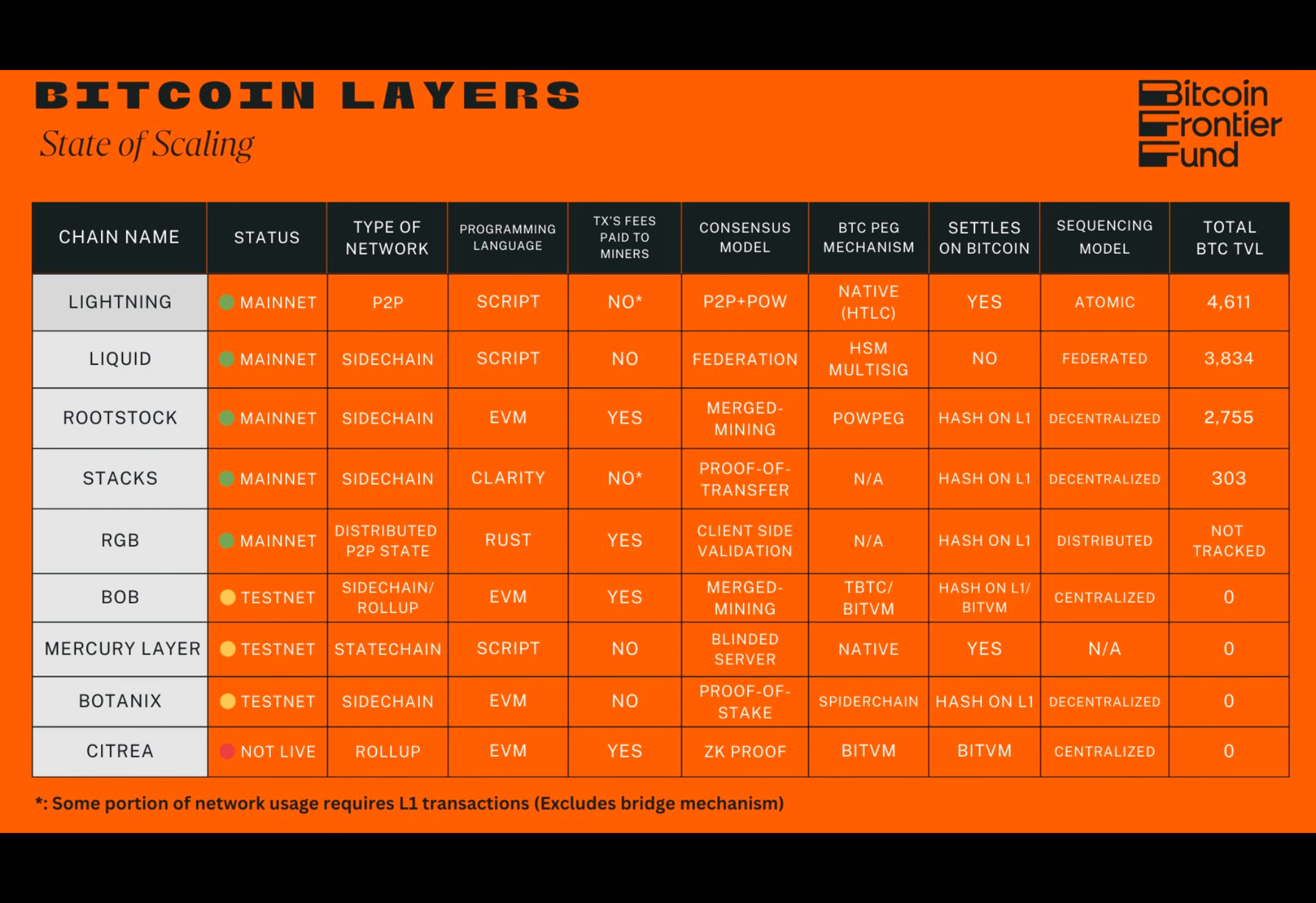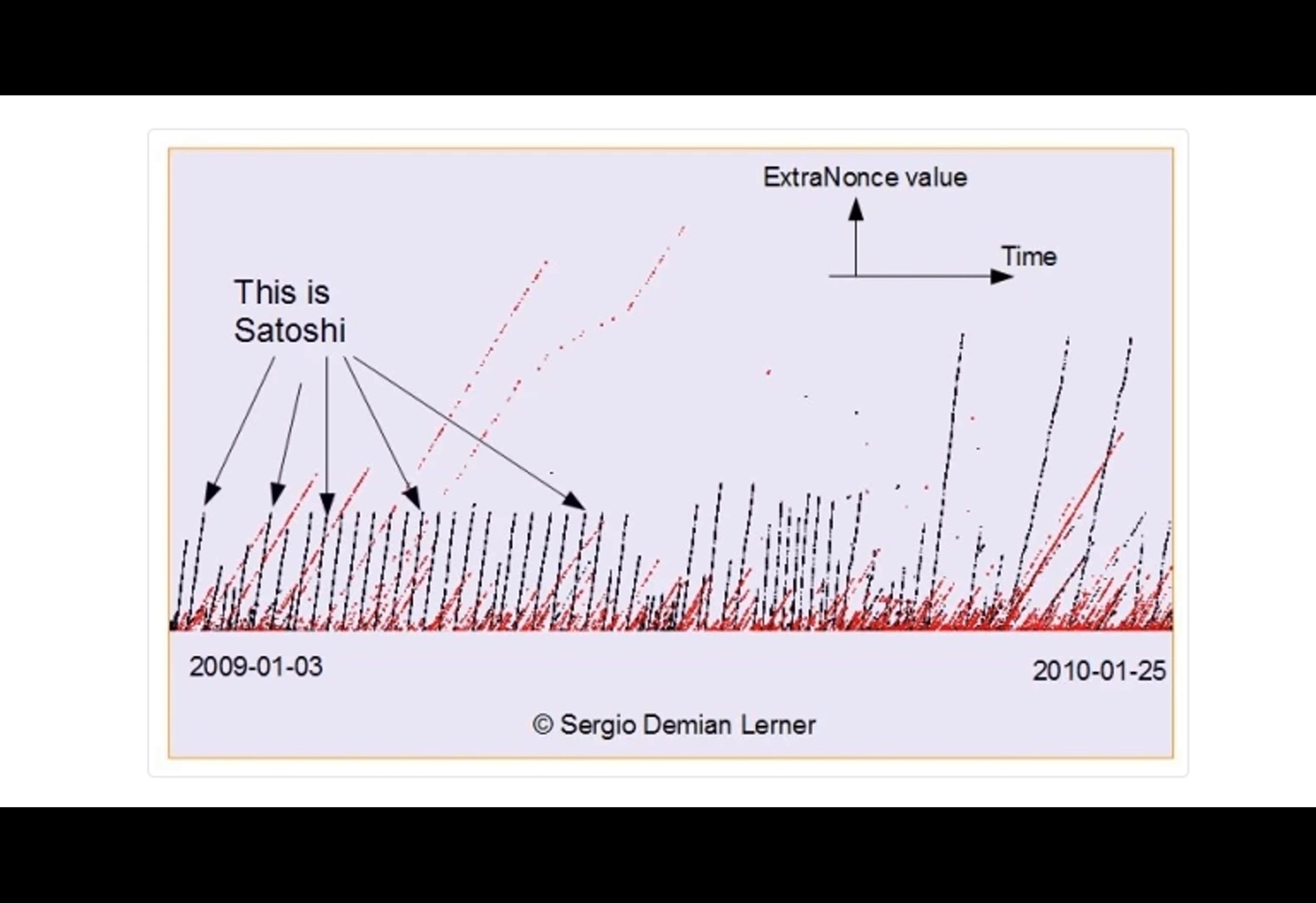On a technical level, BitVMX allows funds to be locked in an unspent transaction output with a spend condition that depends on the result of a program's execution. Lerner said a program must be defined when the UTXO is created, but the program input does not need to be.